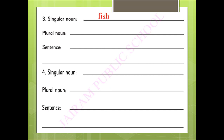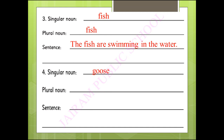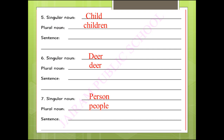Fish — singular and plural form is the same: fish. Sentence: 'The fish are swimming in the water.' Goose → geese: 'The geese are eating worms.' Child → children — create your own sentence. Deer → deer — create your own sentence. Person → people — create your own sentence.